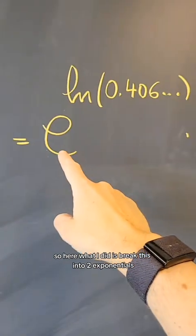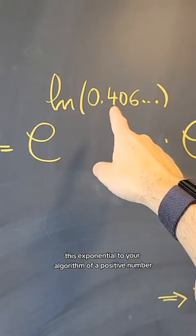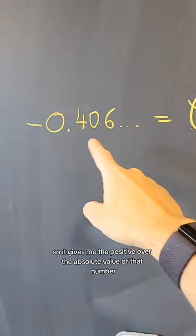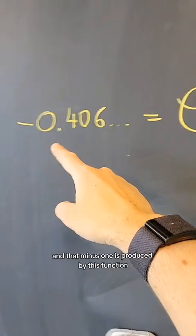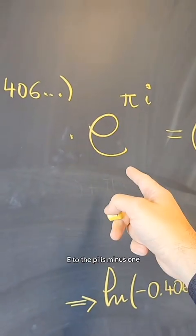So here what I did is break this into two exponentials. This exponential to a logarithm of a positive number will give me the positive number back 0.406, so it gives me the absolute value of that number. And that minus 1 is produced by this function. e to the pi i is minus 1.